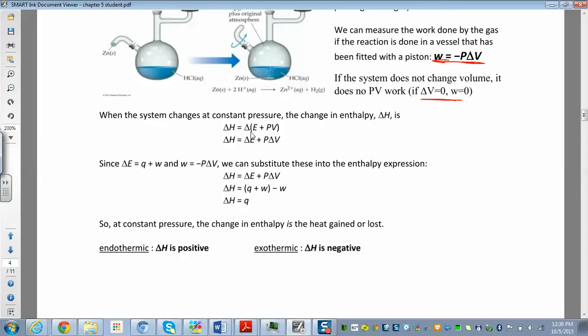It's related to the change in energy and any kind of pressure volume work that's being done. So this delta, again, that's like your final minus initial. You're just kind of distributing this delta here by the variables, pressure is a constant. So you have ΔH is equal to ΔE plus PΔV.